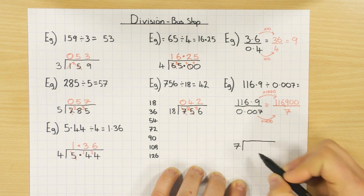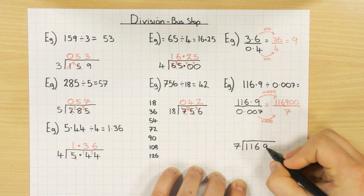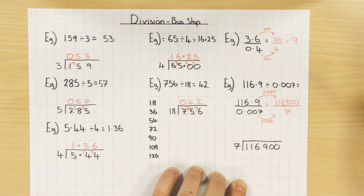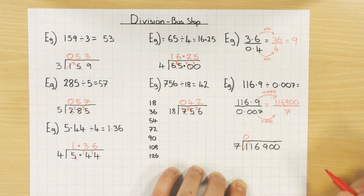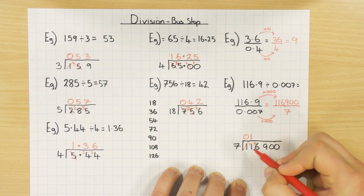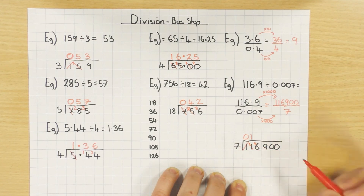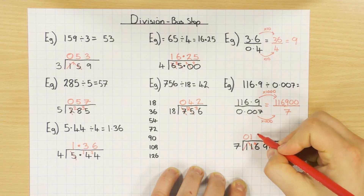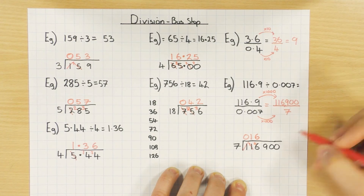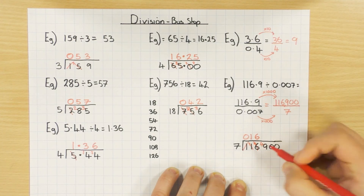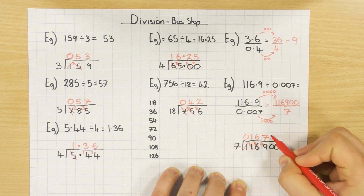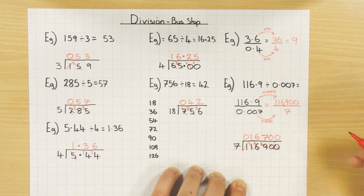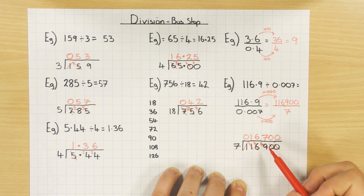7 on the outside, 116,900 on the inside. How many 7s go into 1? None — carry the 1. How many 7s go into 11? Once, with 4 left over. How many 7s go into 46? 6 times (since 6 × 7 = 42), with 4 left over. How many 7s go into 49? That's 7 times exactly (7 × 7 = 49). How many 7s go into 0? 0. And again into 0? 0. So the answer is 16,700.